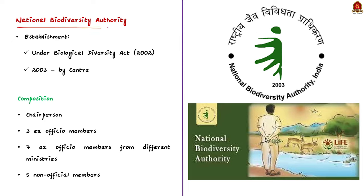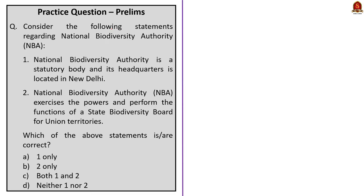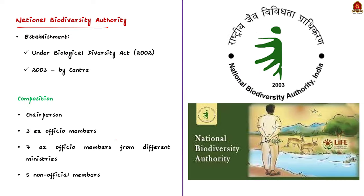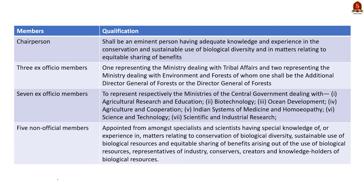Our next topic is the National Biodiversity Authority (NBA). The NBA was established under India's Biological Diversity Act 2002 by the central government in 2003, making it a statutory body. Its composition includes one chairman, three ex-officio members, seven ex-officio members from different ministries, and five non-official members — all appointed by the central government. The NBA gives approval for certain persons — including foreigners, non-resident citizens, organizations not incorporated in India, and organizations with non-Indian participation — to obtain biological resources for research, commercial utilization, biosurvey, and bio-utilization.